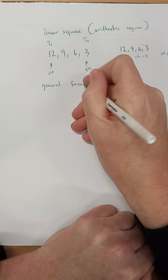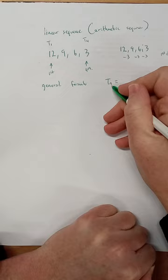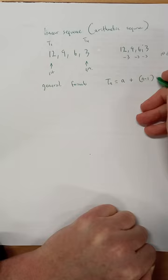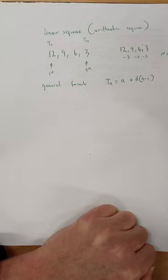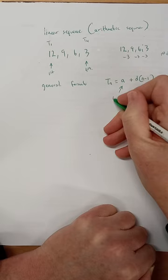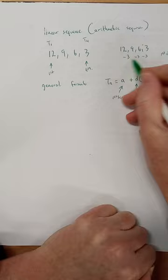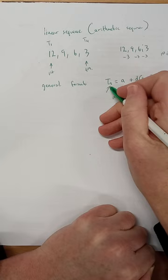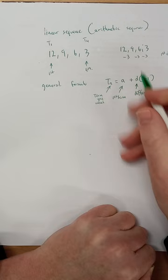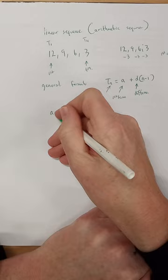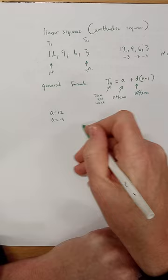There's a general formula that lets you predict any term in a linear or arithmetic sequence: the Tn formula. Tn, your nth term, equals a plus d times (n minus 1), where a is always the first term in the sequence and d is the common difference. The n represents the term you want. If I want the fifth term, I substitute 5 for n along with the corresponding a and d.